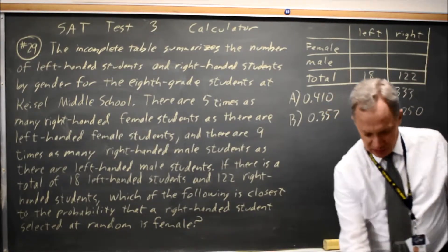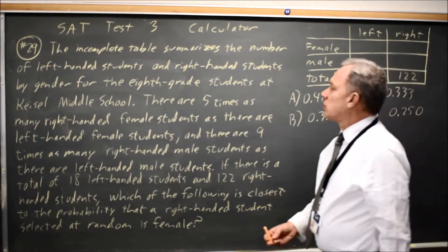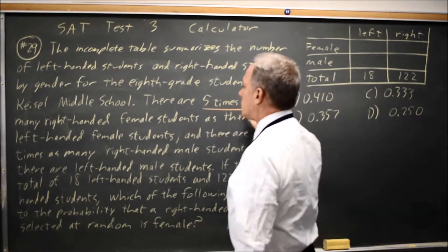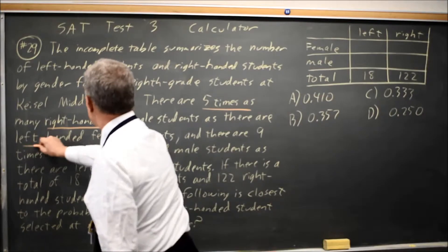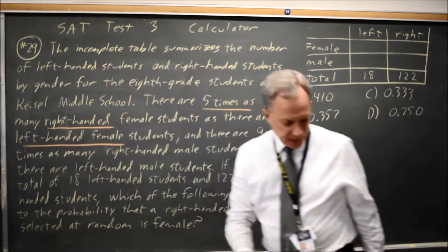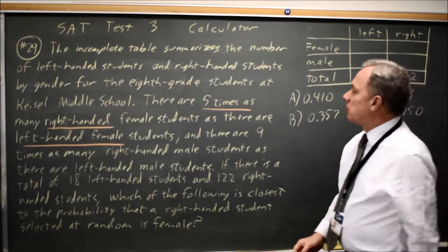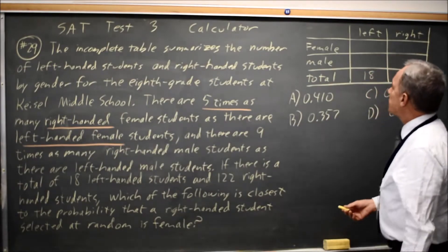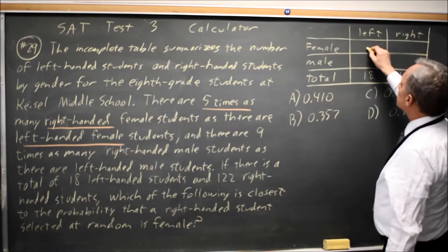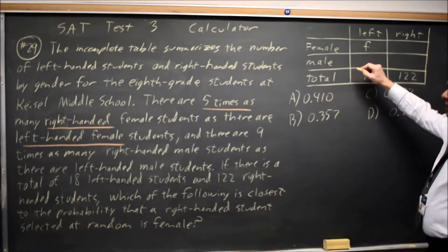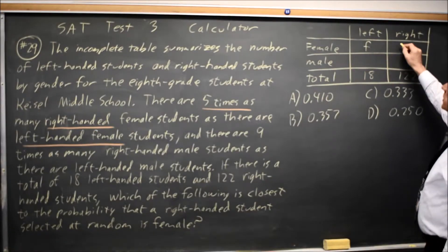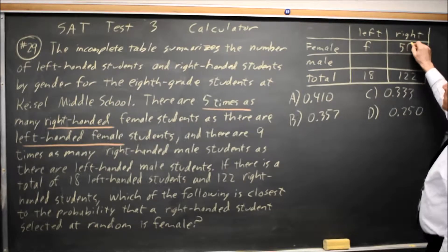We are told there are five times as many right-handed females as there are left-handed females. So I'm going to call the number of left-handed females F, and the number of right-handed females is five times as many, so that is 5F.